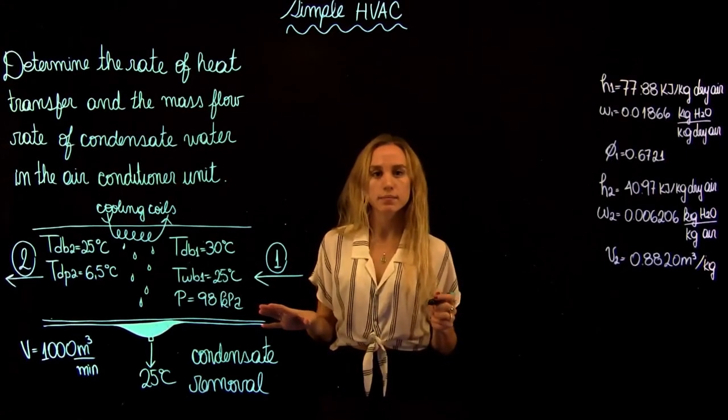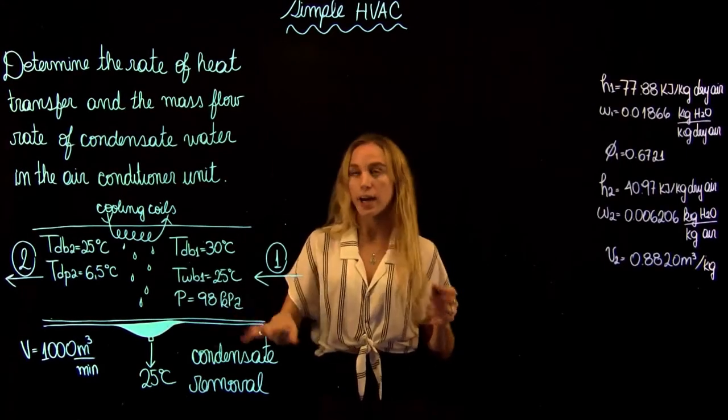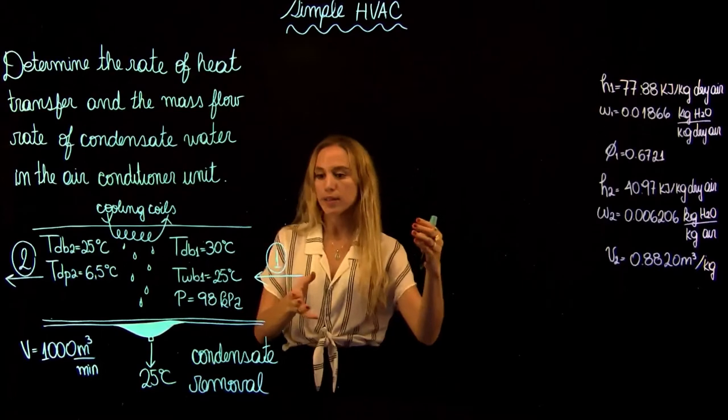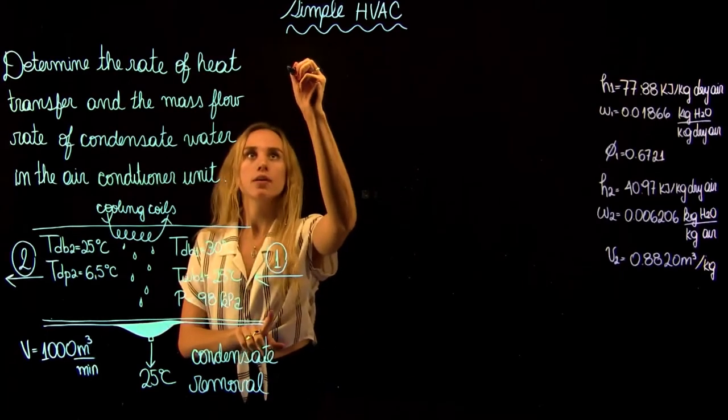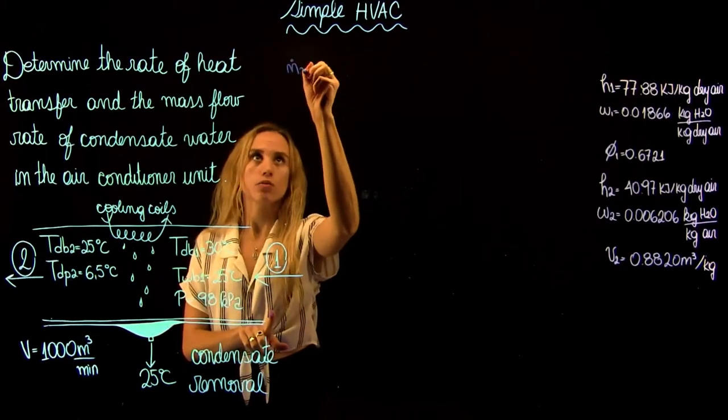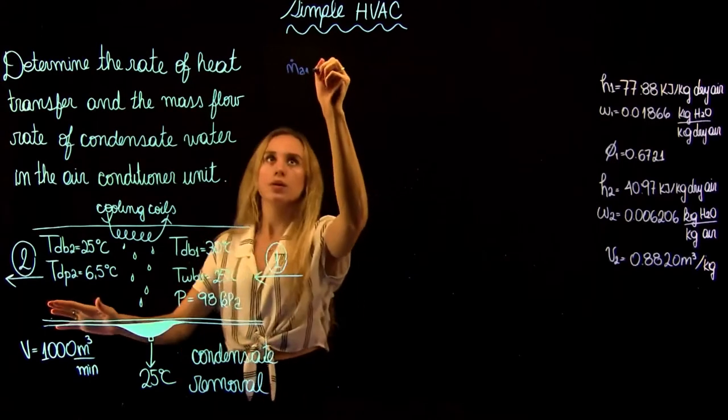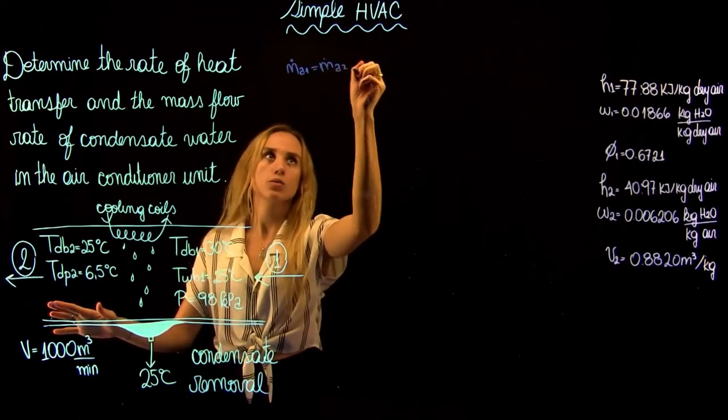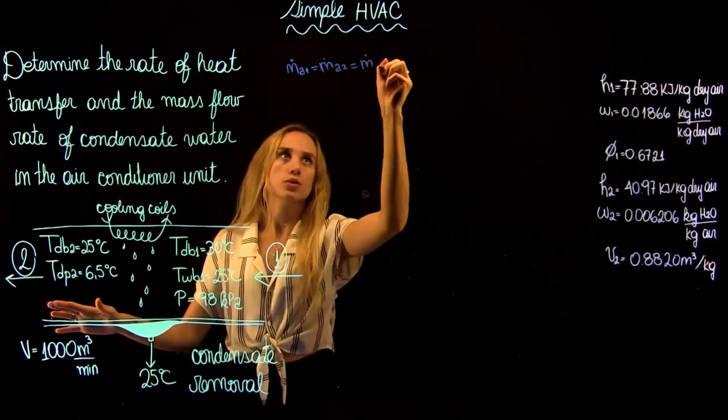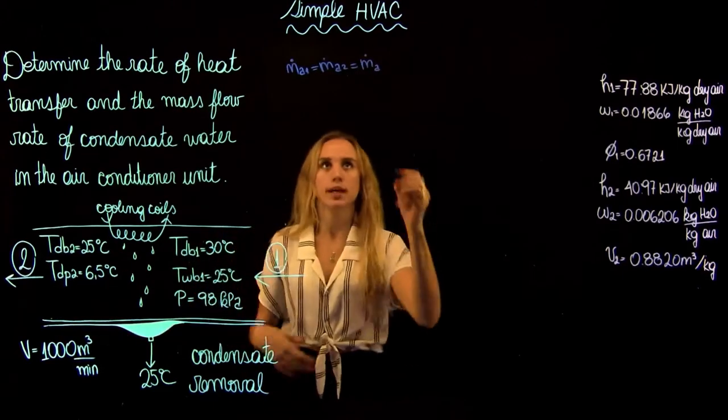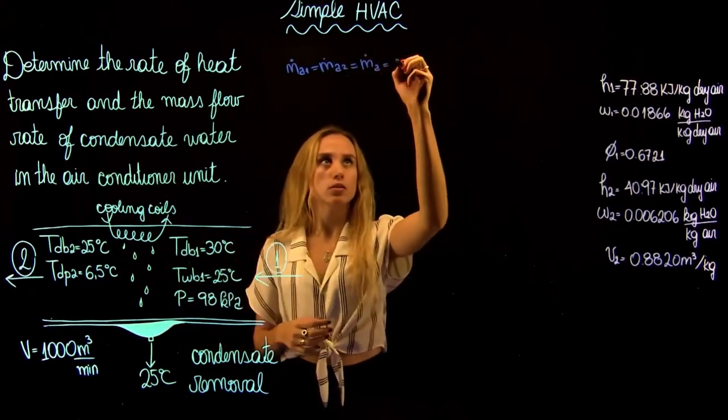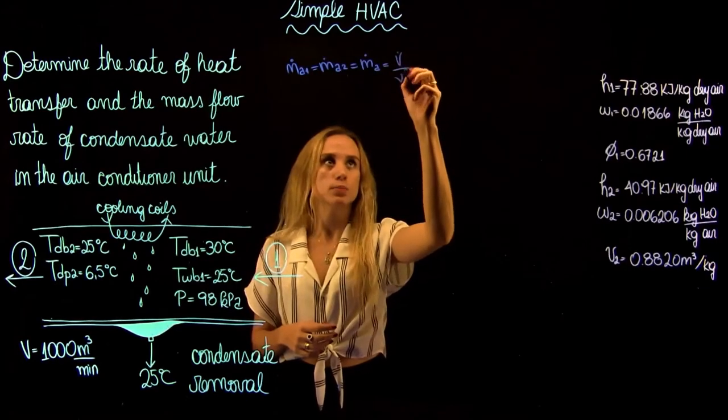Now let's write the mass balance for the dry air. The dry air, we're having an income at 1, so we have mass flow rate of air at 1, and we only have an exit. So mass flow rate of A at 2, we can just call this mass flow rate of dry air because it's constant.